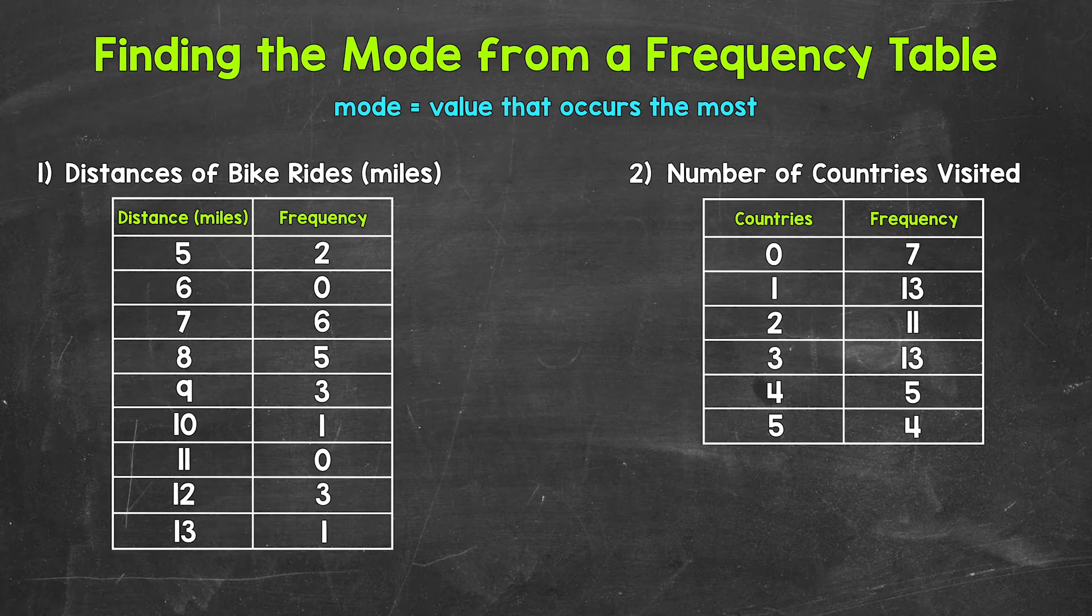Let's jump into our examples, starting with number one, where we have a frequency table displaying data about bike ride distances. Let's say that a person tracked the distance of their bike rides for a month. Here are the results.